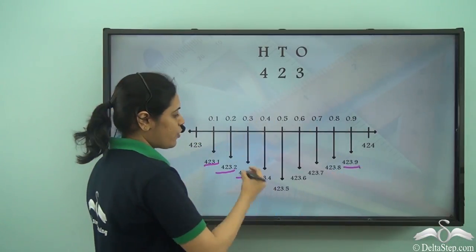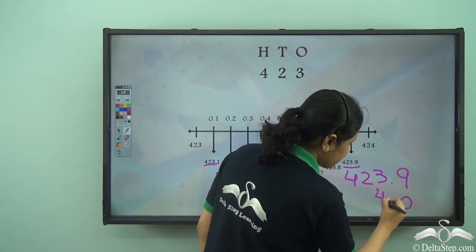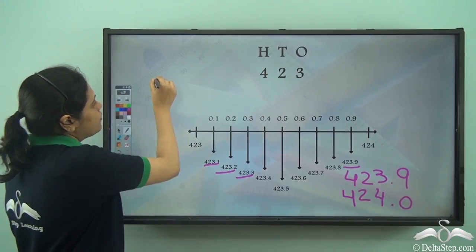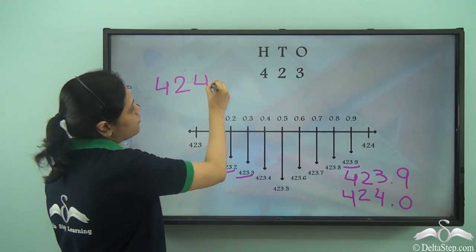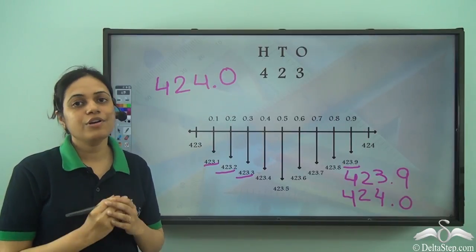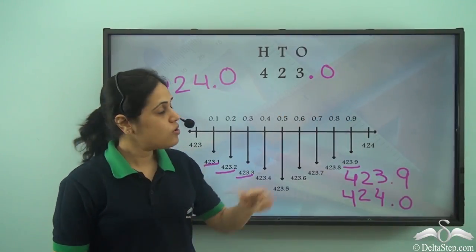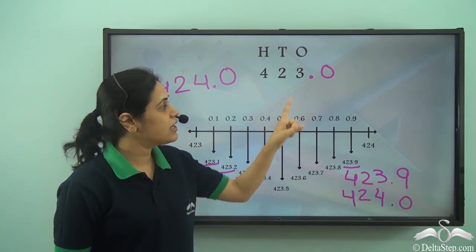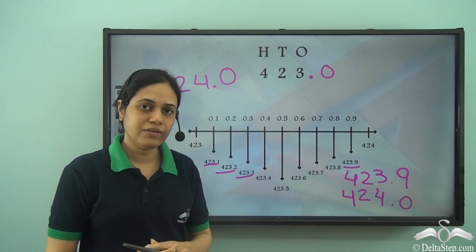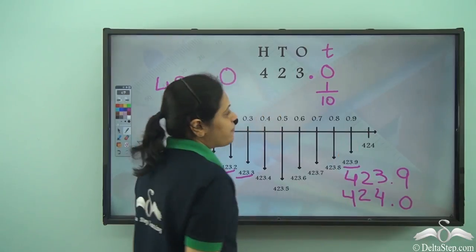After 423.9, 9 becomes 0 and 3 becomes 4, giving me 424. Remember, 424 can also be written as 424.0 — it is the same thing. We can put a decimal point and a zero after any whole number and it remains the same. So a decimal point is placed after the ones place to represent digits in places which are less than 1 — that is, the tenths place, which represents 1 by 10.